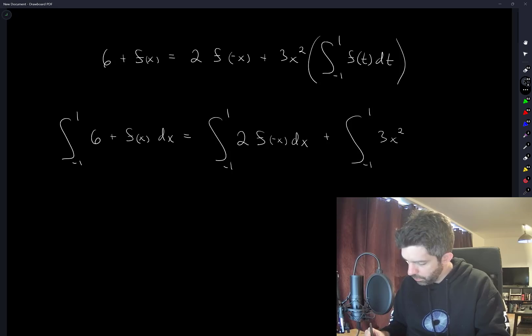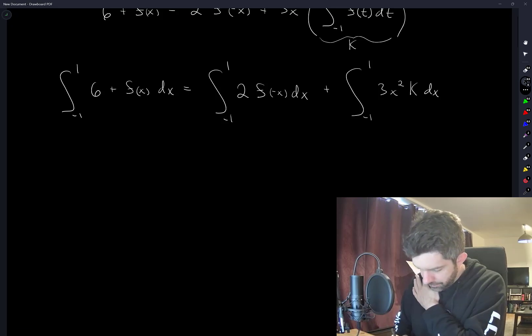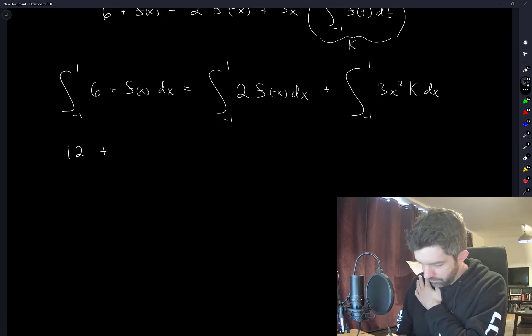I'm going to call this whole thing k. So here we have the integral from -1 to 1 of 6 is 12. So 12 + k equals 2 times...